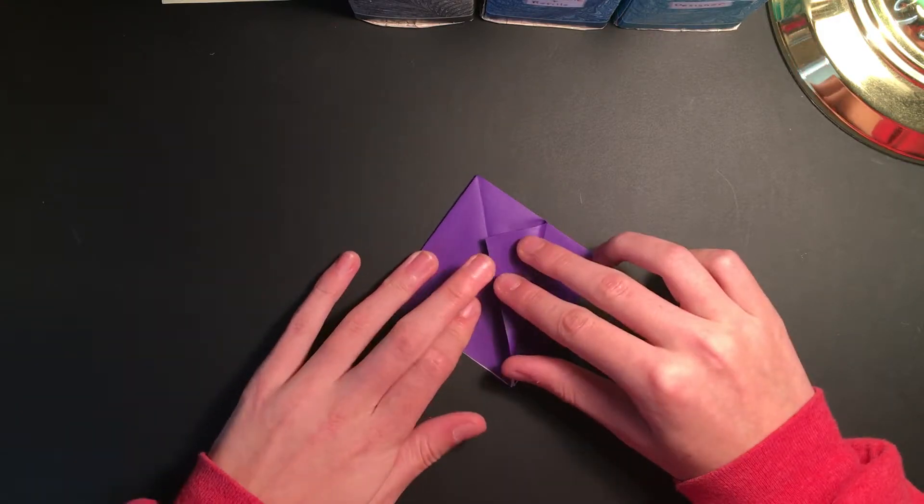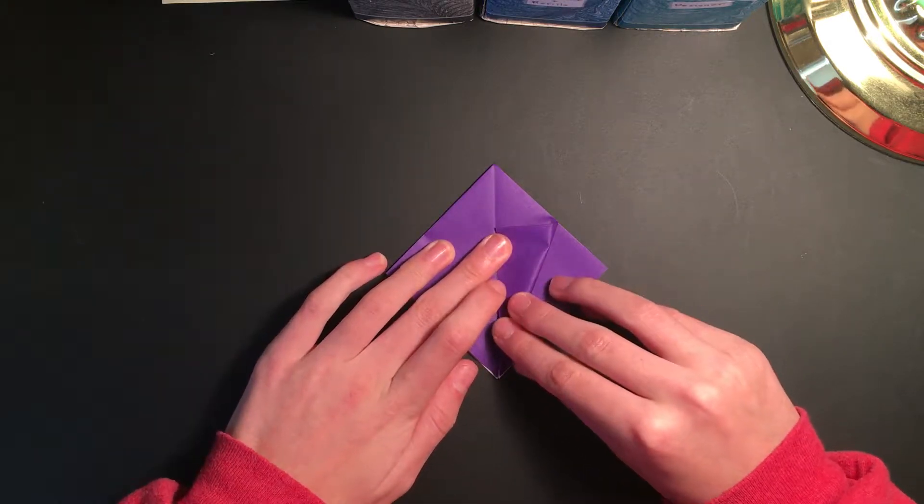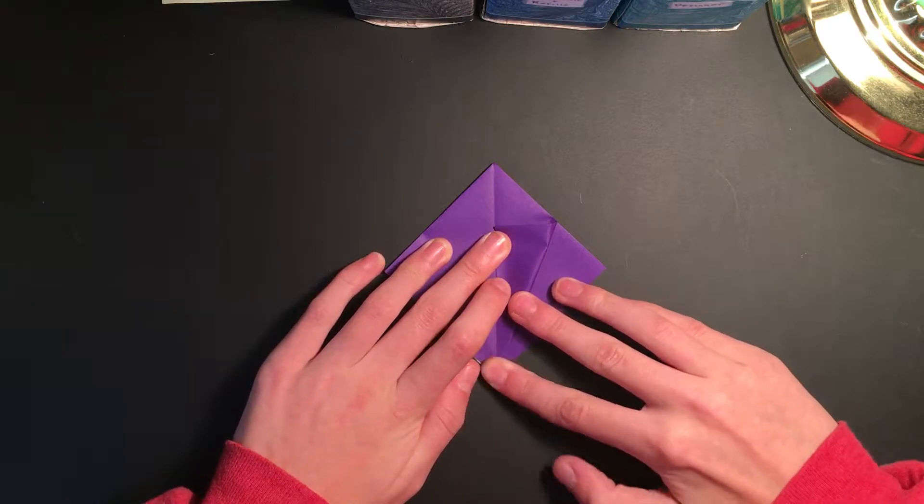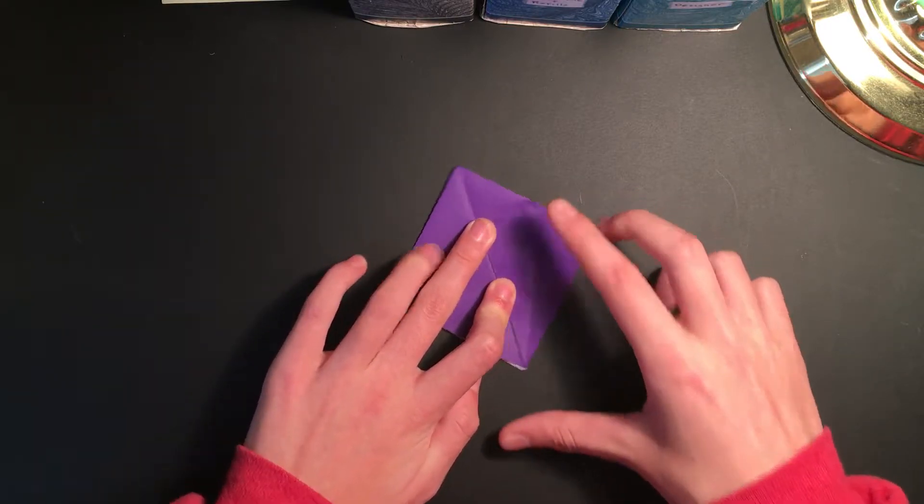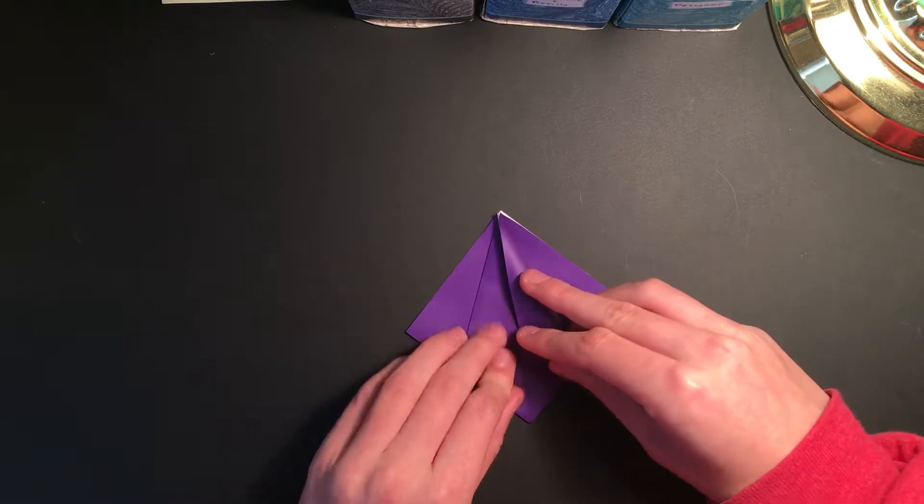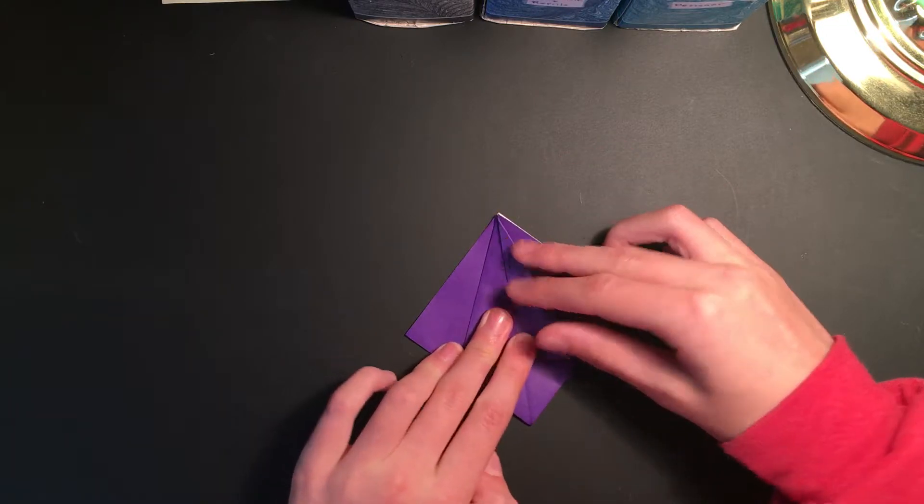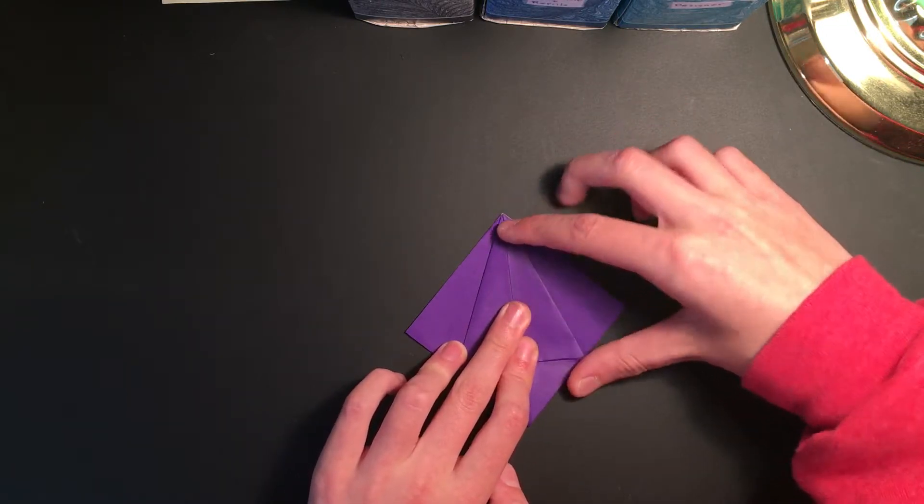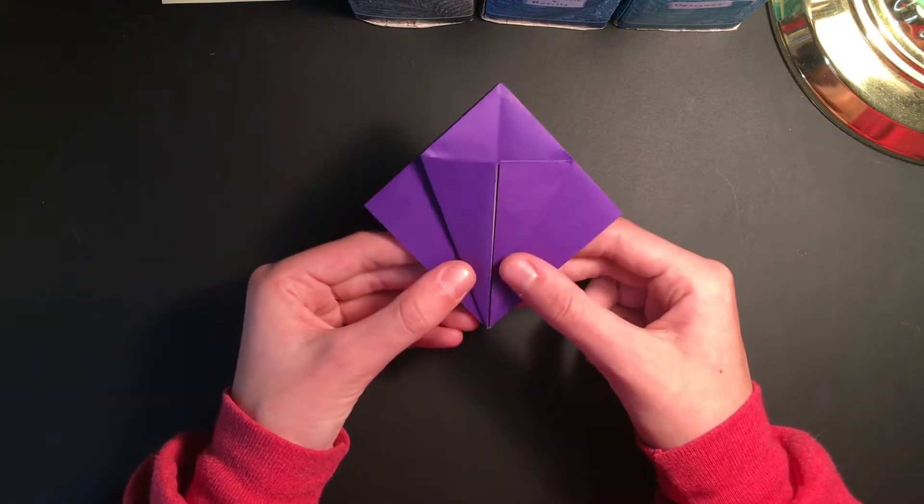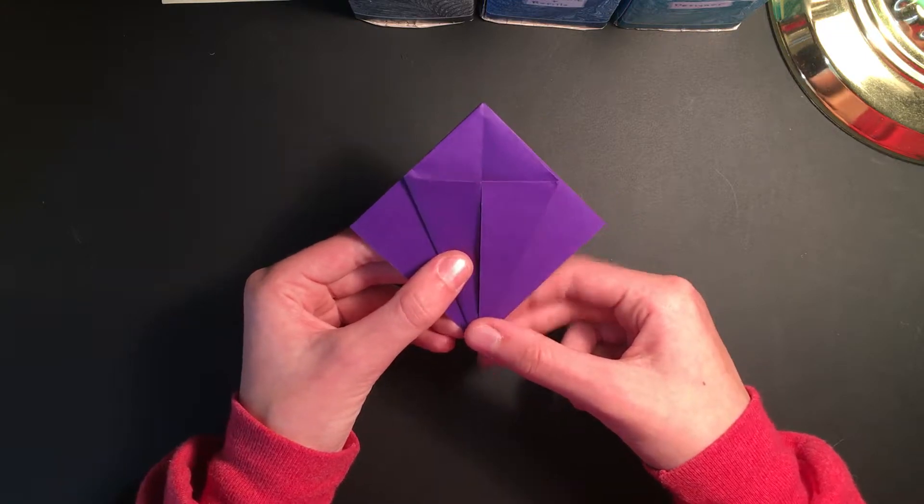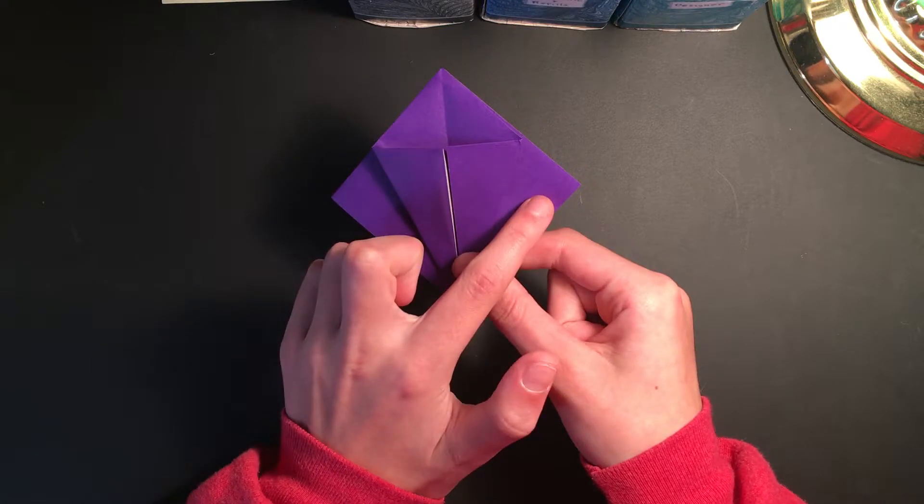Fold the sides into the center crease and try to get it as pointed and as precise as possible at the bottom. Take your time with this. You should get this nice point here and we're going to flip it back to its original position.